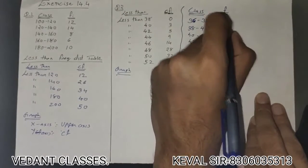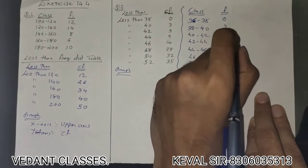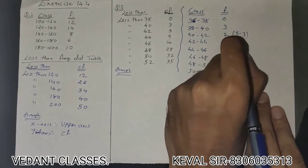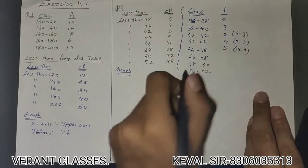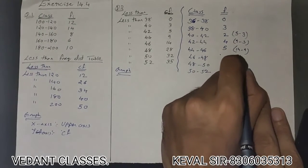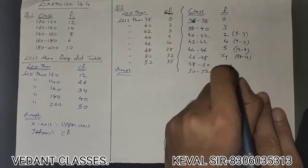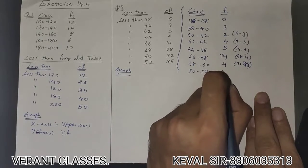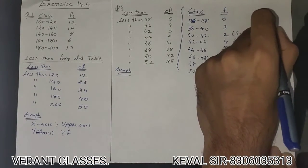Finding the frequencies: first class is 0, second is 3, third is 9 minus 3 = 2 (wait, 9 minus 3 = 6... the value shown is 2 for 40–42), fourth is 9 minus 5 = 4, fifth is 14 minus 9 = 5, sixth is 28 minus 14 = 14, seventh (48–50) is 32 minus 28 = 4, and last (50–52) is 35 minus 32 = 3.